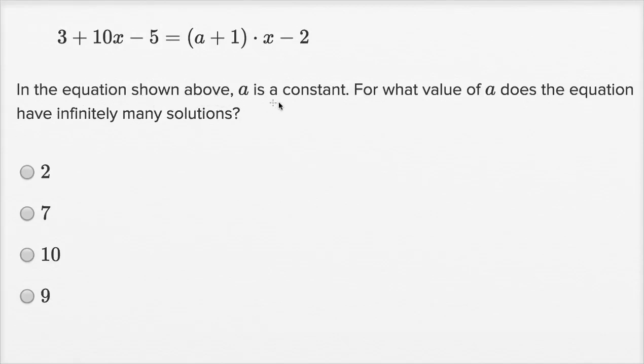In the equation shown above, a is a constant. For what value of a does the equation have infinitely many solutions? You end up with infinitely many solutions if your equation simplifies to something like x equals x, or one equals one, something that's going to be true for any x that you pick.